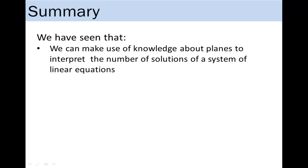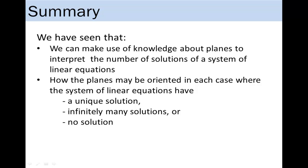Let us summarize what we have gone through so far. We have seen that we can make use of knowledge about planes to interpret the number of solutions of a system of linear equations — how the planes may be oriented in each case where the system has a unique solution, infinitely many solutions, or no solution. Do you think there could be more relationships between systems of linear equations and planes? Do not hesitate in asking questions. Jot them down. You may post questions on the discussion forum at the end of the learning module.